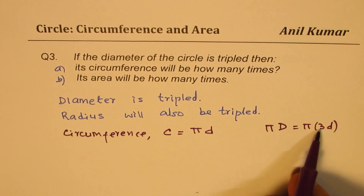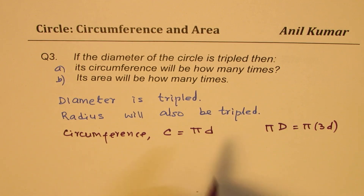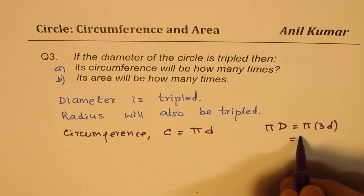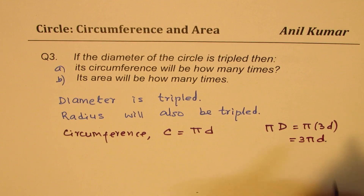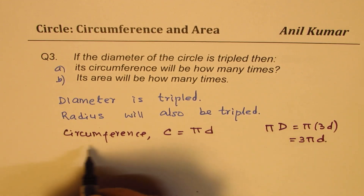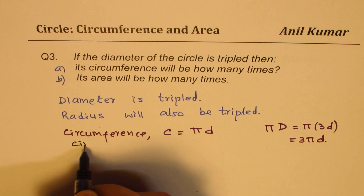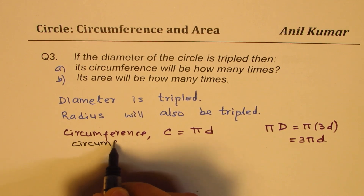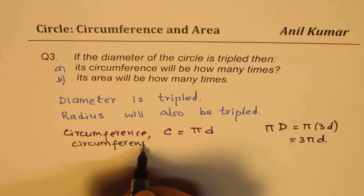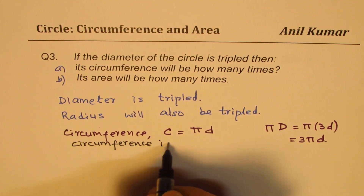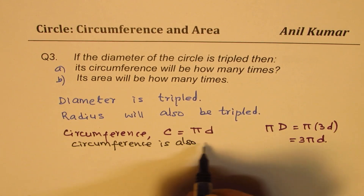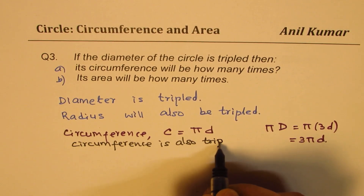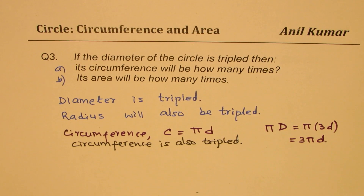So, you see circumference is tripled — 3 times. If the smaller circumference is πD, the bigger one is 3πD. So, we could say circumference is also triple. That is how we could answer this.